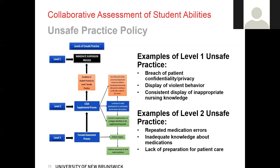If the student has failed to demonstrate consistent progress and two-thirds of the course has not lapsed, you will be required to generate a new supplemental document and repeat the process. If the student's level 2 unsafe practice escalates to a level 1, or a student demonstrates level 1 unsafe practice, it starts an immediate suspension process. Examples of level 1 unsafe practice include, but are not limited to, breach of patient confidentiality or privacy, display of violent behavior, or consistent display of inappropriate nursing knowledge.